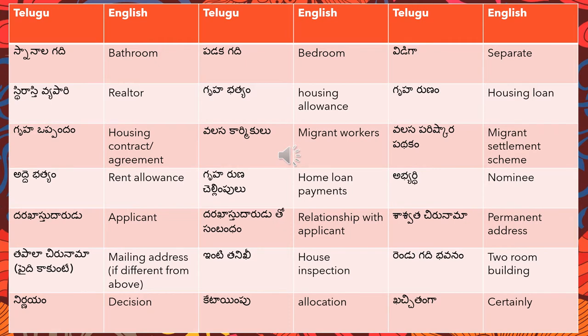'Gruha bhathya' means housing allowance — 'gruha' means housing and 'bhathya' is the allowance. 'Gruha rina' means housing loan — 'ronav' means loan.